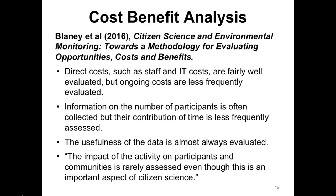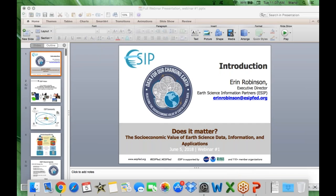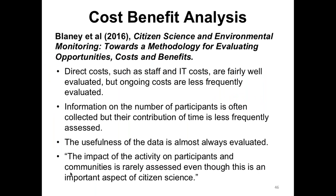Two studies looking at cost-benefit analysis found that direct costs such as staff and IT have been fairly well evaluated for citizen science projects. However, ongoing costs are less frequently incorporated. Information on the number of participants is often collected, but we don't really track how much time they're investing in the project. Usefulness of the data is evaluated, but the downstream impacts are often not considered. When putting together a case study book on the impacts of citizen science, scientists were very good at thinking about their science impacts but not the societal impacts.